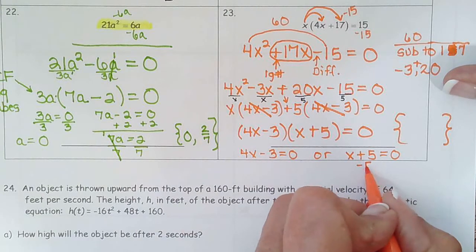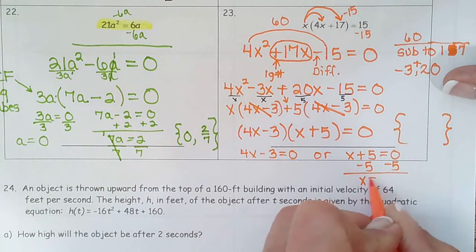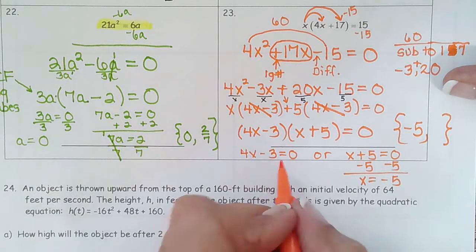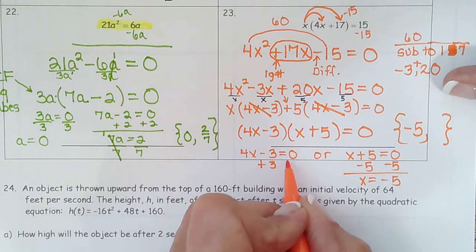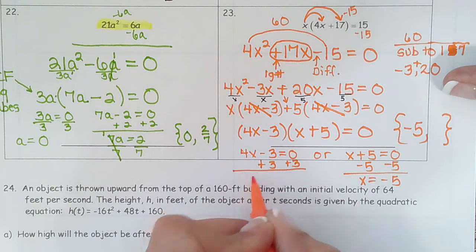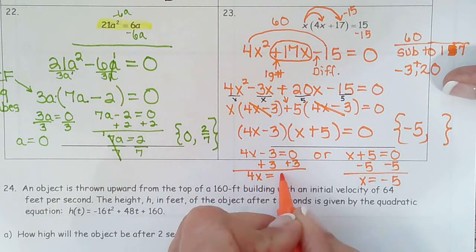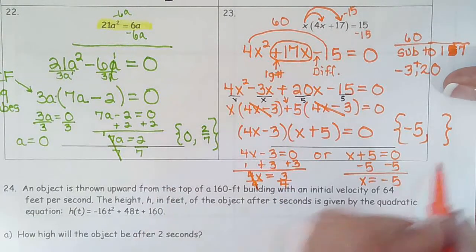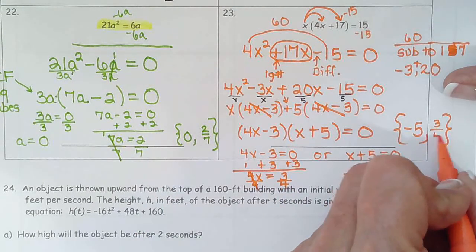So subtract 5, subtract 5, x equals negative 5 is my first solution. Add 3, add 3, add 3, 4x equals 3. So divide by 4 and I can see x equals 3 fourths is my second solution.